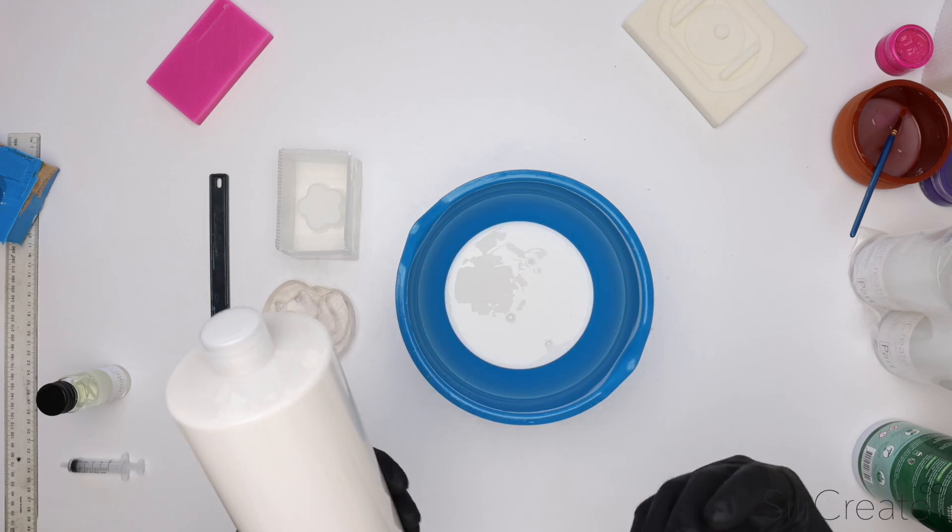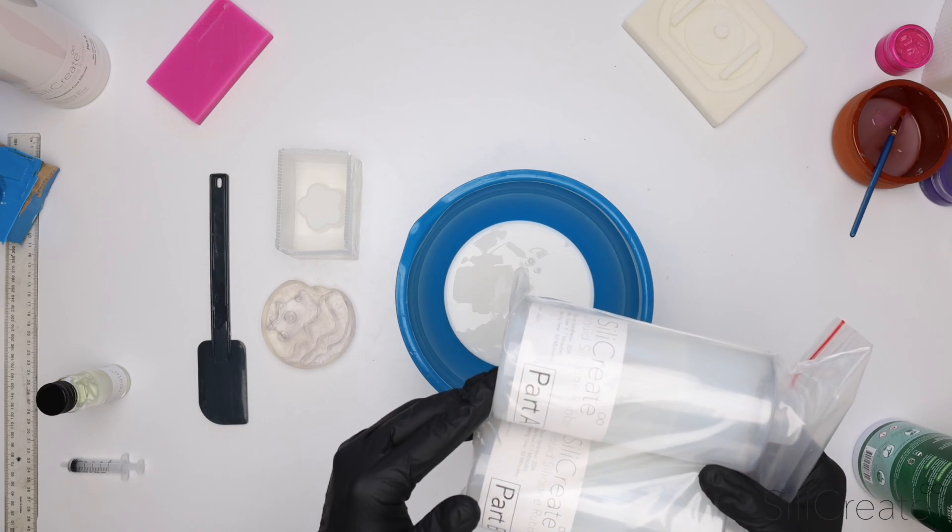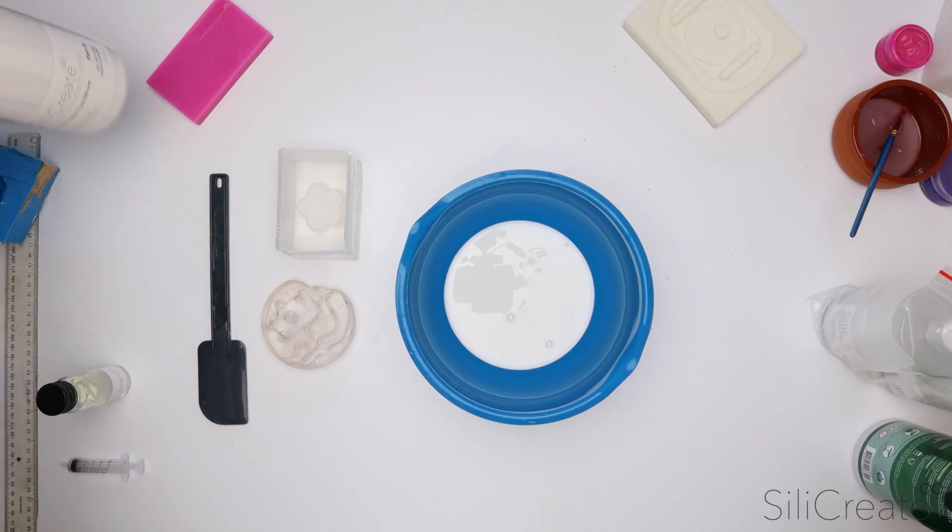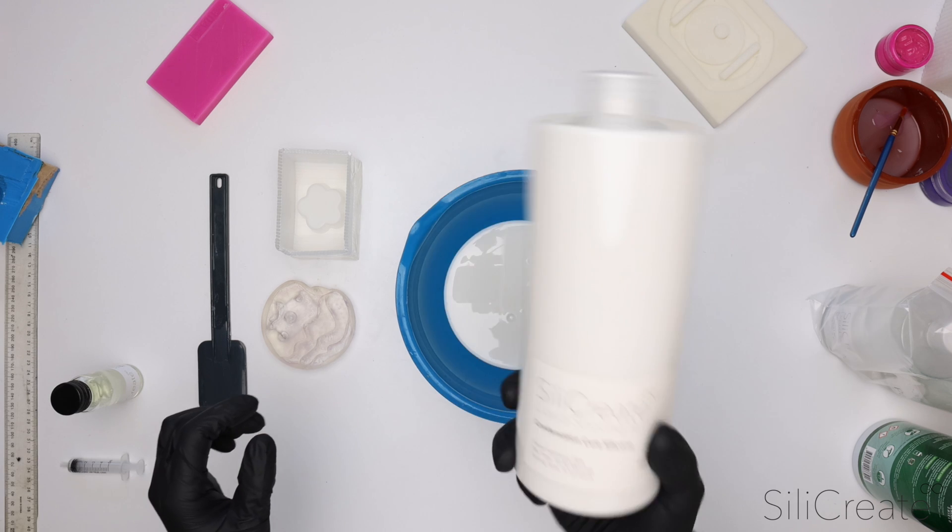This stuff is a little bit thicker or more viscous when you compare it to the platinum cure. Both of these are 20A shore hardness, but with this one being a one part with the catalyst, it is a little bit thicker to pour.